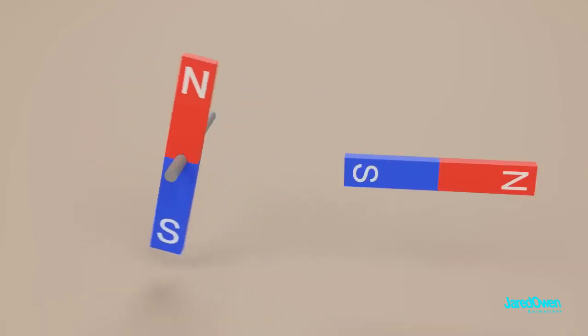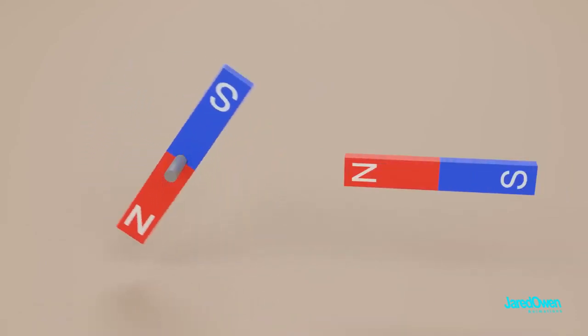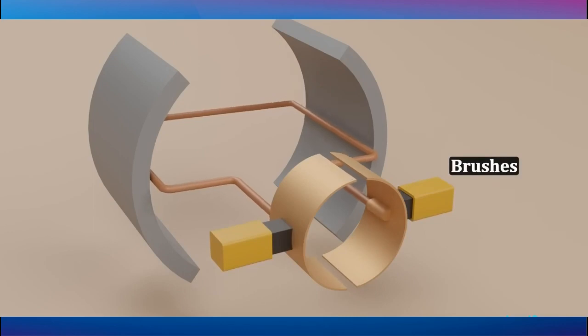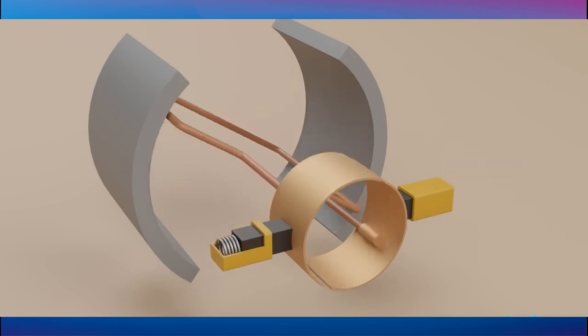The winding of the stator in an AC motor kind of does the job of the rotor of a DC motor. In this case, it's a ring of electromagnets that are paired up and energized in sequence, which creates the rotating magnetic field.